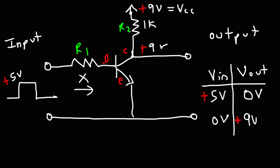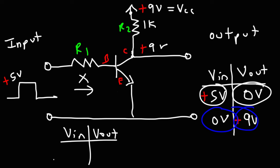Notice how the transistor can serve as an inverter. When the input is high, the output is low. And when the input is low, the output is high. You can rewrite the table like this: when the input is low, the output is high; and when the input is high, the output is low. And so that's a basic inverter circuit — that's how you could use the NPN transistor as an inverter for digital circuits. So now you know how to use the BJT transistor as an electronic switch and also how to use it as an inverter. For those of you who want more videos on electronics, science projects, and other interesting stuff, feel free to take a look at the videos in the description section below. Thanks for watching.